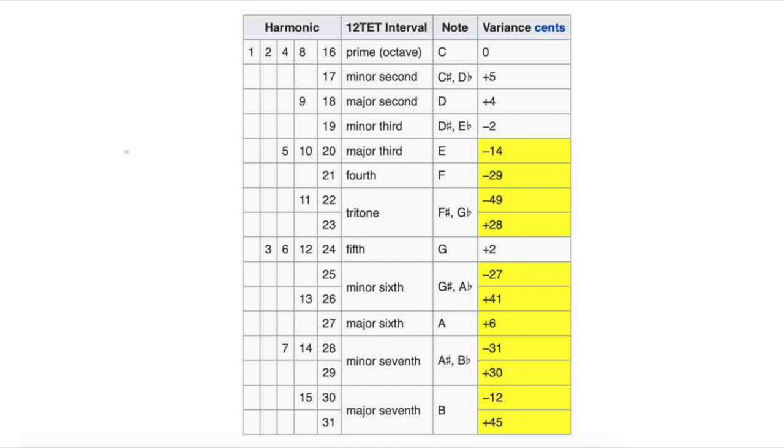You can see that while some of the intervals, such as the 5th, the minor 3rd, and the major 2nd, are very similar in frequency, others, such as the tritone, minor 6th, and major 7th, are significantly different to the point where it would be obvious to the ear.